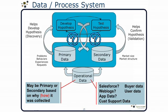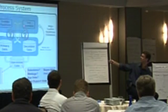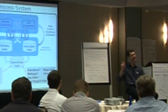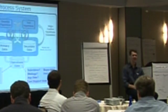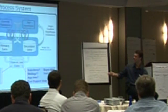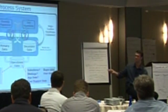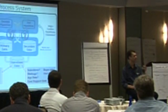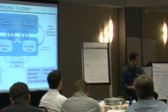My primary data — problems, behaviors, experiences, and requests — helps me develop my hypothesis. These feed back on each other as we're doing questions. Now, your operational data can also be converted into primary or secondary data, depending on how rich it is and how much you've collected.